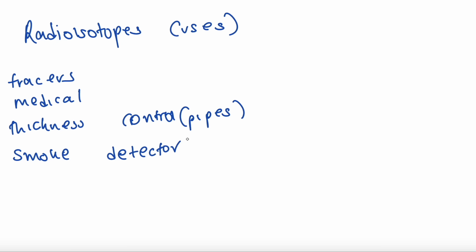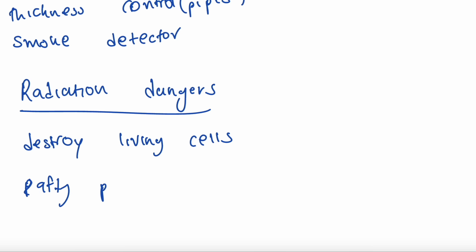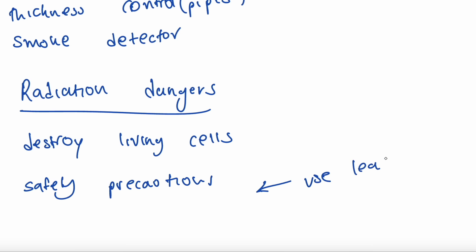Radioisotope uses include tracers, medical applications, and smoke detectors. Radiation dangers: it destroys living cells. To prevent exposure, use lead containers.